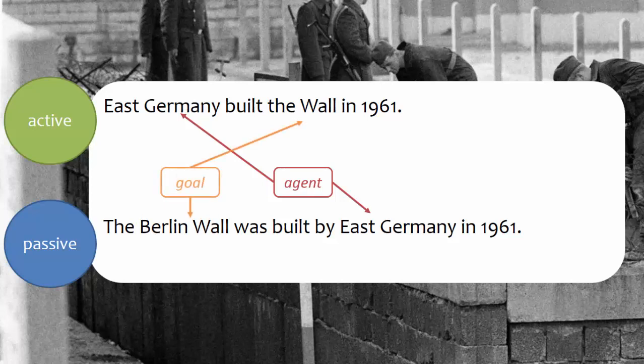The goal in these examples is the Berlin Wall. Remember that in grammatical terms, goal means the thing or person acted upon. The action — in this case building or constructing — is directed towards the goal, the Berlin Wall. The difference between the two sentences is that in the active, the goal is rendered as a direct object, and in the passive, it's rendered as the subject.